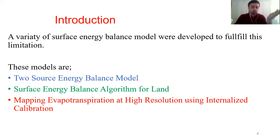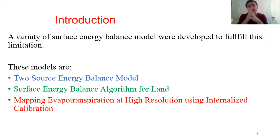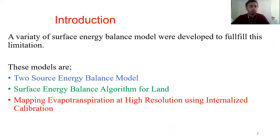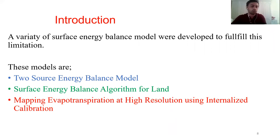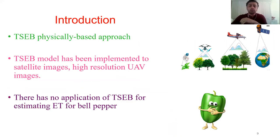Some researchers used empirical methods to relate evapotranspiration to vegetation indices, while others used surface energy balance models. Studies showed that surface energy balance models provided the most precise ET estimation for generating ET maps. The widely used methods include the Two-Source Energy Balance model and the Surface Energy Balance Algorithm for Land, known as SEBAL.